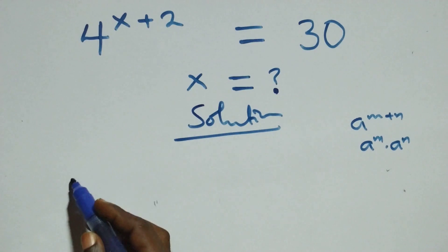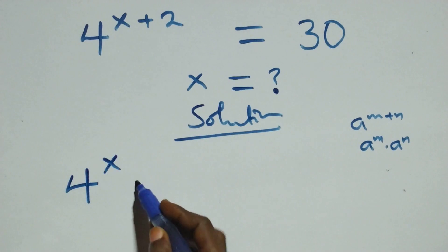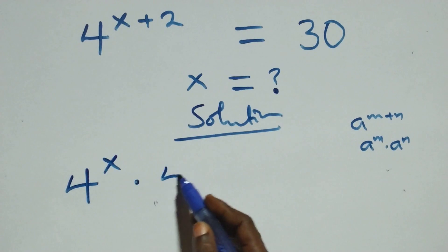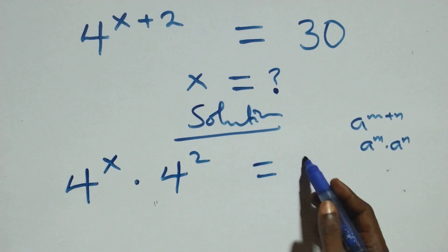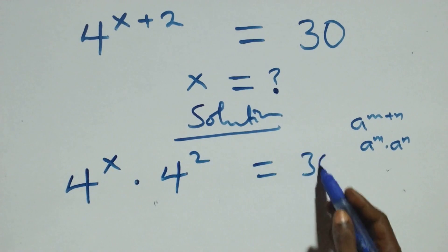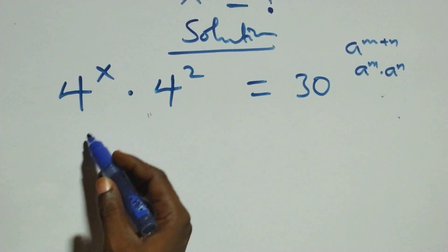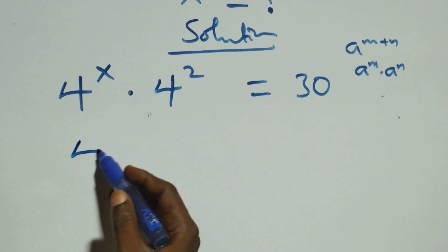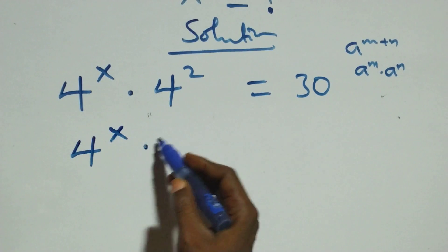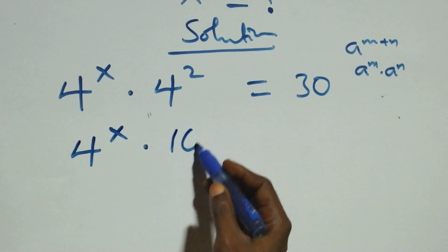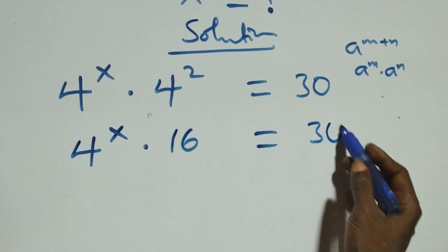Here we have four raised to power x times four squared equals thirty. This is the same thing as four raised to power x times four squared, where four squared equals four times four, which is sixteen. So four raised to power x times sixteen equals thirty.